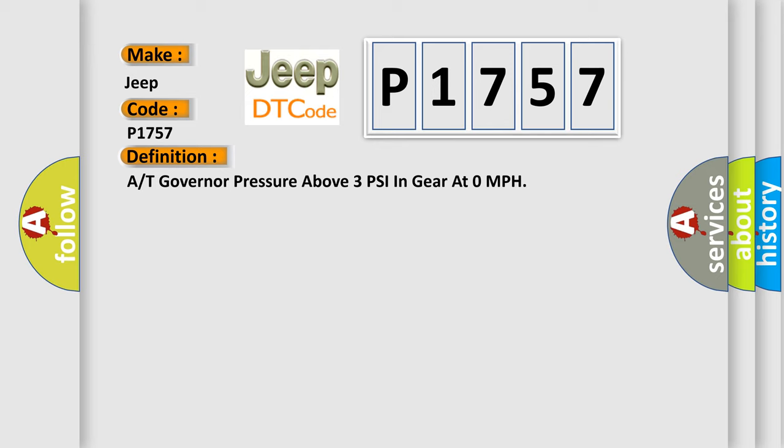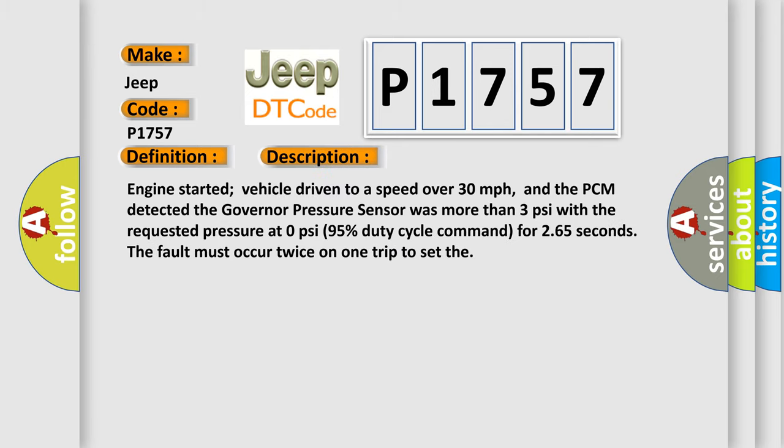And now this is a short description of this DTC code. Engine started, vehicle driven to a speed over 30 miles per hour, and the PCM detected the governor pressure sensor was more than 3 psi with the requested pressure at 0 psi, 95% duty cycle command for 265 seconds. The fault must occur twice on one trip to set the code.